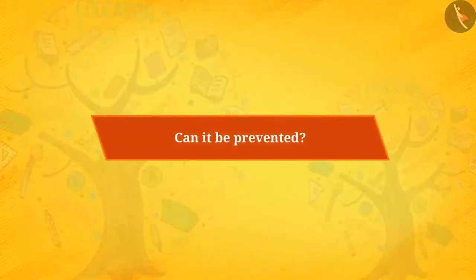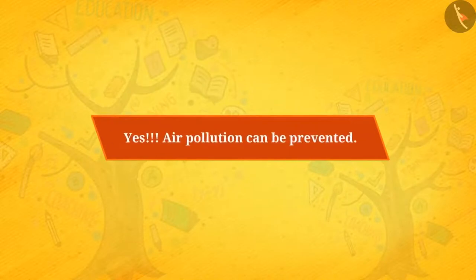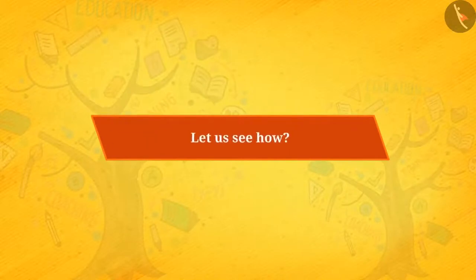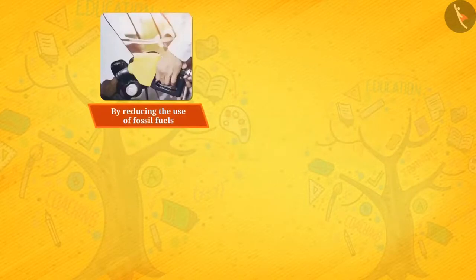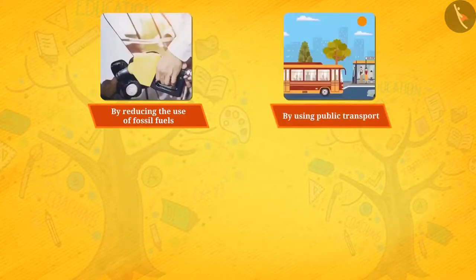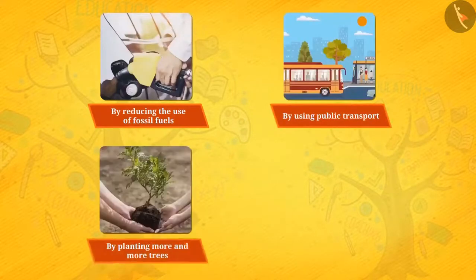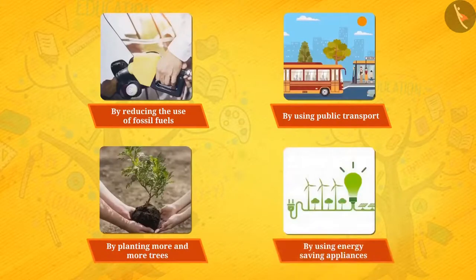But can air pollution be prevented? Yes, air pollution can be prevented. By reducing the use of fossil fuels, by using public transport, by planting more and more trees, and by using energy-saving appliances, we can prevent air pollution.